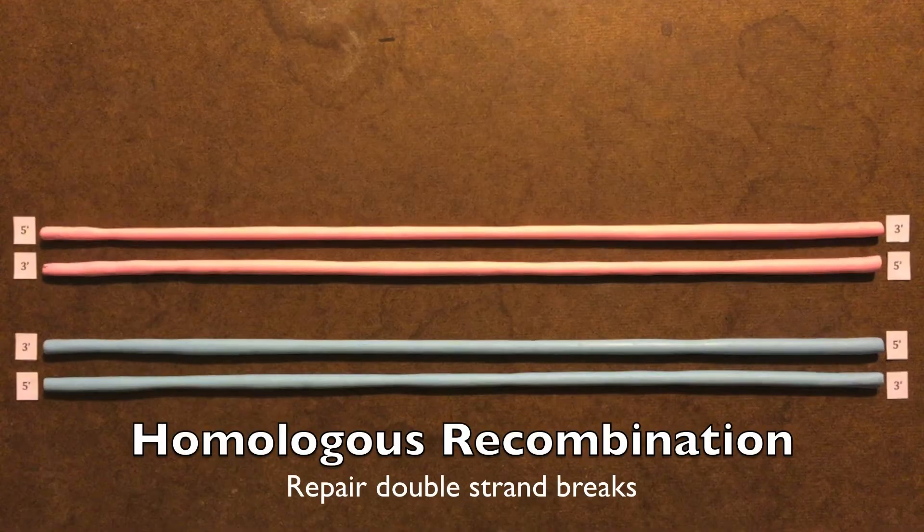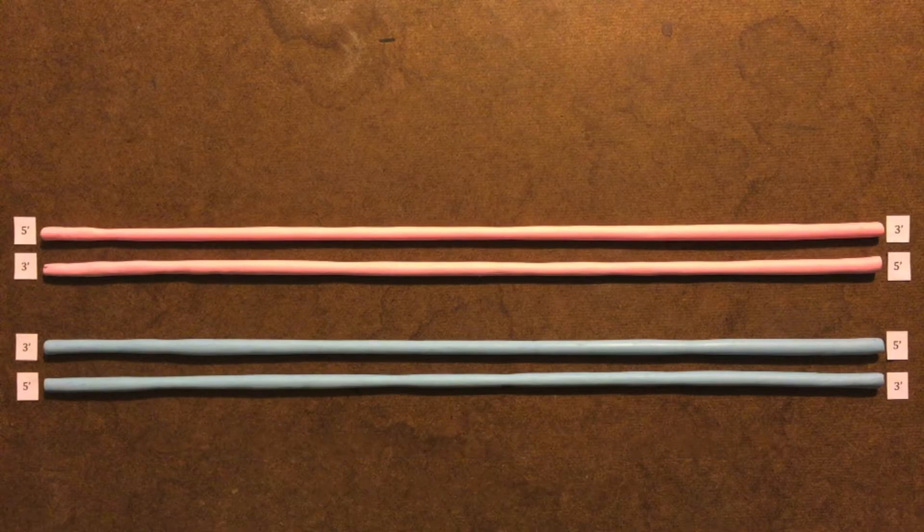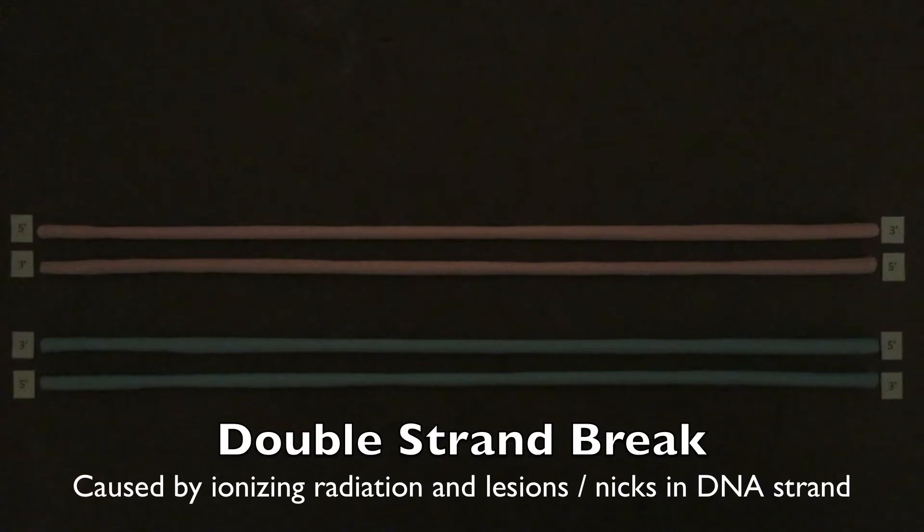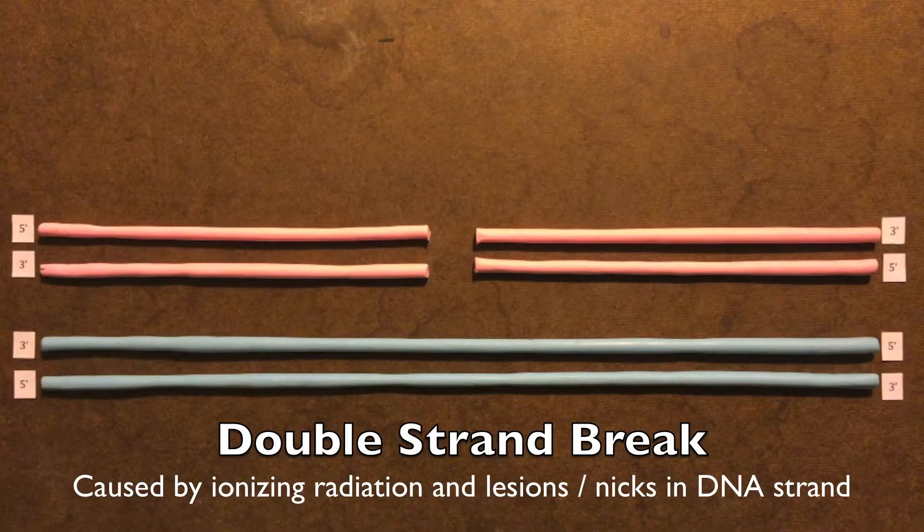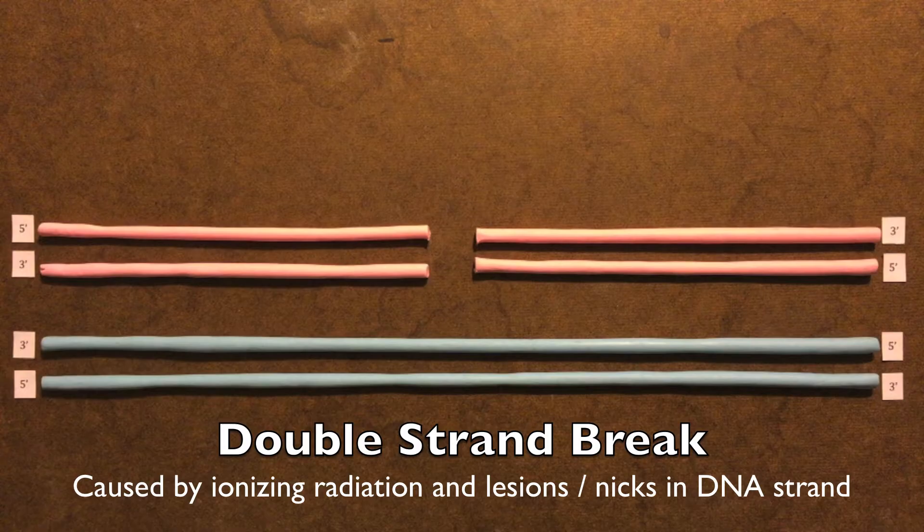One of the major mechanisms to repair double-strand breaks in prokaryotes is homologous recombination. Double-strand breaks in DNA are caused by ionizing radiation and DNA damage, such as lesions and unpaired nicks in the DNA strand.